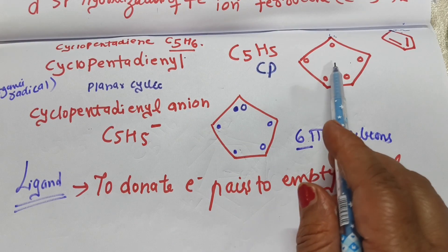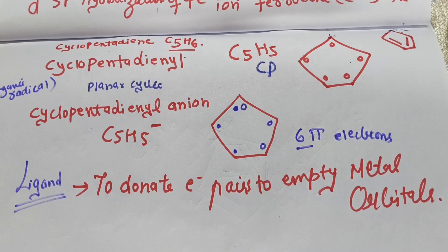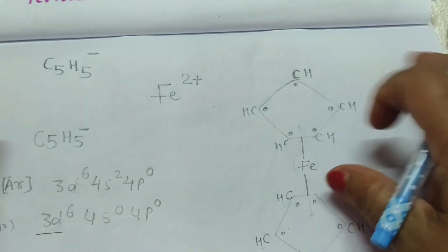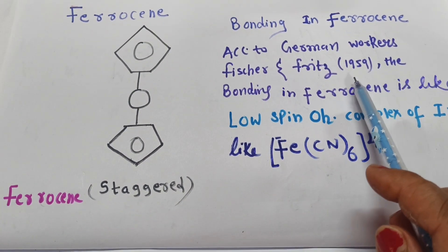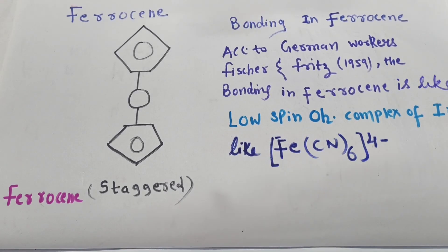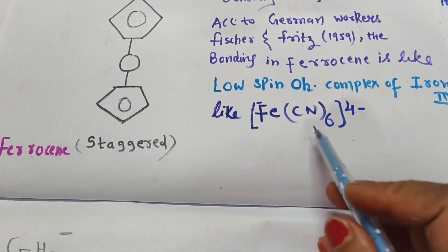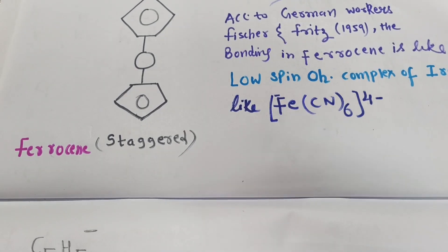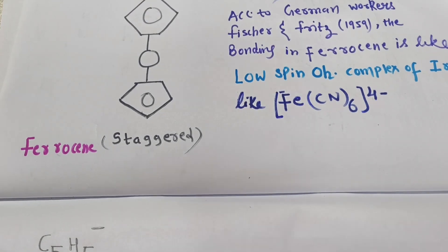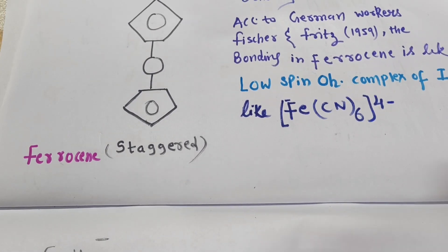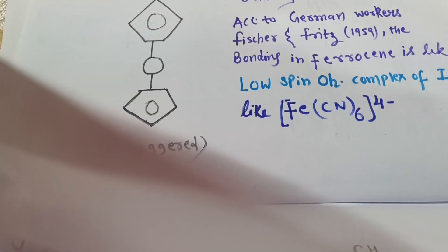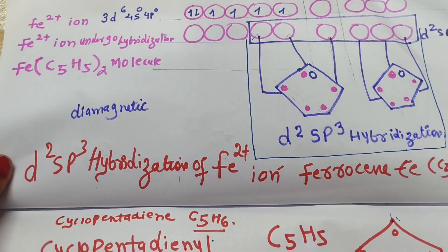Now let us discuss the bonding in ferrocene, which is very important. German workers Fischer and Fritsch explained the bonding in 1951. They said it is similar to the low-spin octahedral complexes of iron, like [Fe(CN)6]4−. Since cyanide is a strong ligand causing electron pairing, ferrocene undergoes d²sp³ hybridization and iron is in a diamagnetic condition.